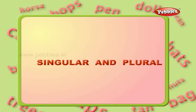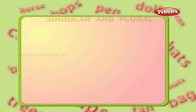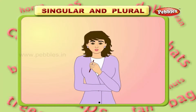Singular and plural. When a naming word denotes a single person, animal or thing, it is called singular.